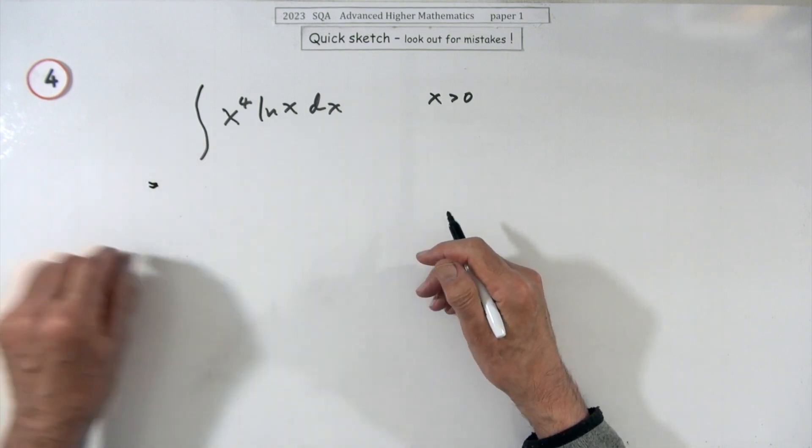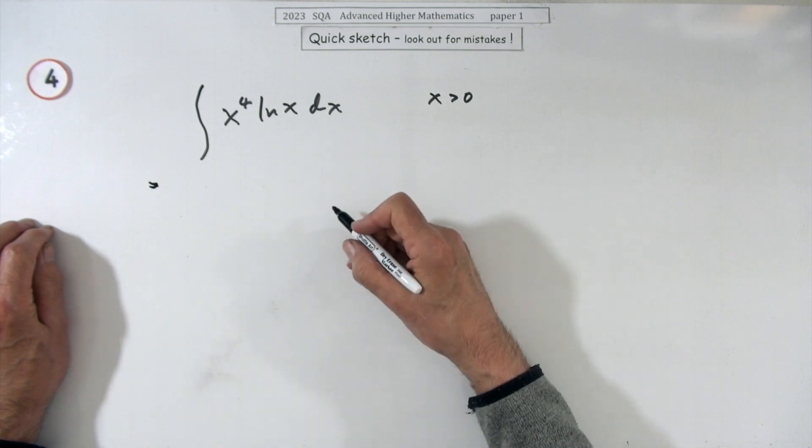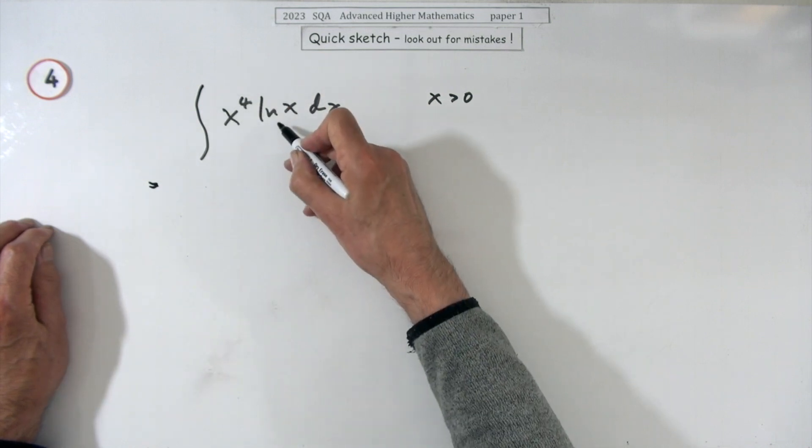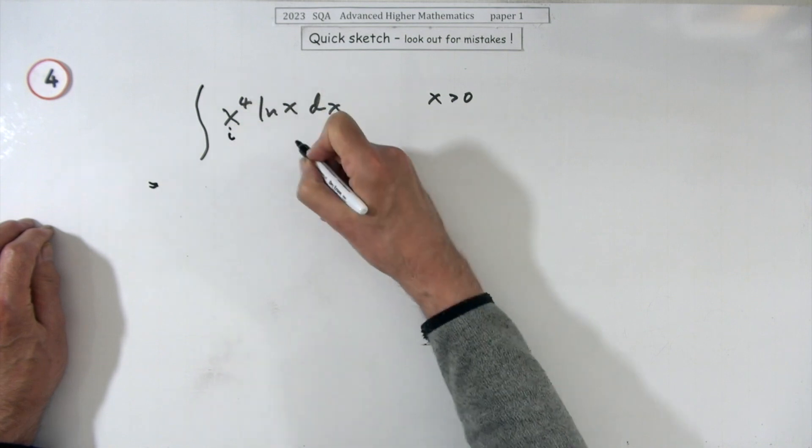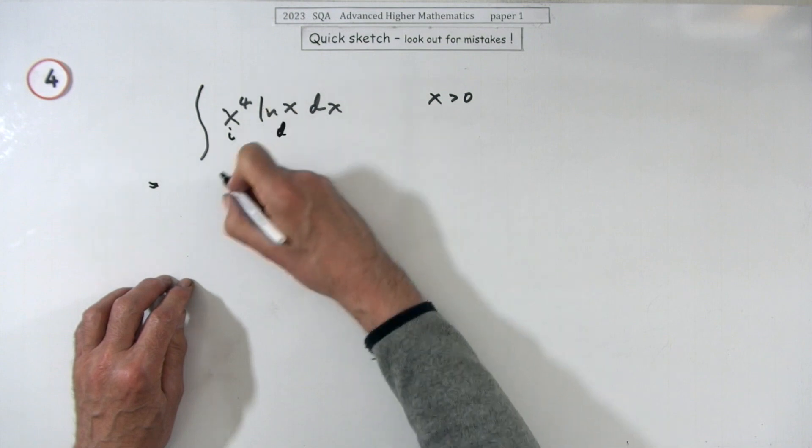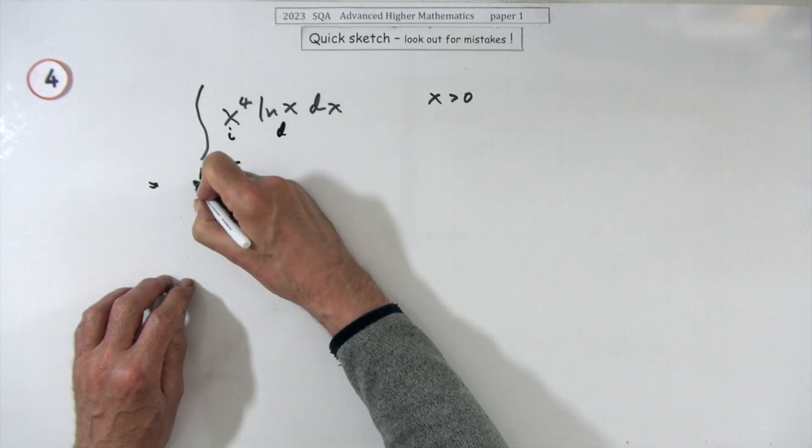That just means deciding which one you're going to differentiate and which one you're going to integrate. Normally go for that, but that's got too high a power, and you don't want to be integrating that one. So I'll integrate that and differentiate that.